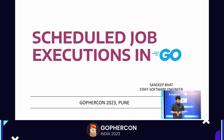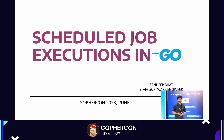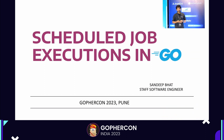Moving on, let's discuss scheduled job executions in Go and how you want to come up with a design for a system that can perform these jobs at scale. I would like to start by taking a step back, looking at the very basics, and then we'll try to come up with a design iteratively.